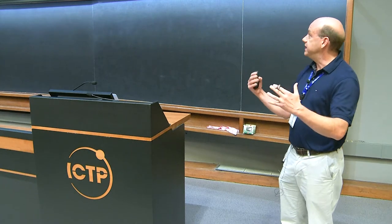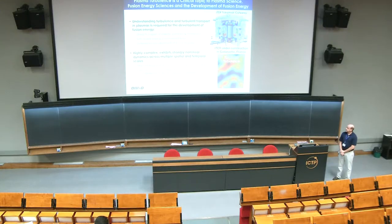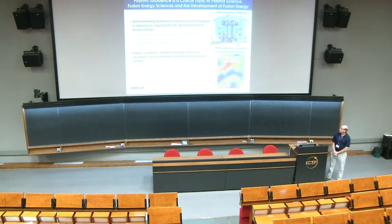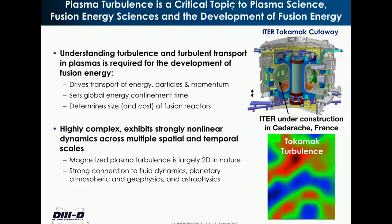Turbulence ultimately helps set a fundamental parameter called the global energy confinement time — basically how well the plasma keeps the heat and particles inside of it. As a result of turbulence, there is a significant reduction in the energy confinement time relative to what would result from basic neoclassical processes. This ultimately determines the size and cost of fusion reactors. I show here a picture of the ITER tokamak, under construction in Cadarache, France — a very large international project designed to demonstrate the feasibility of fusion energy.